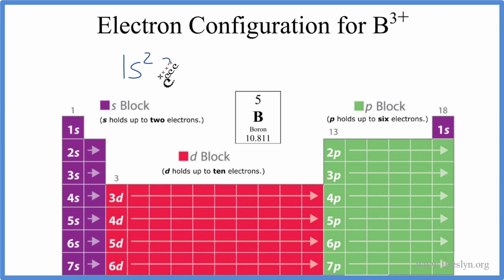we go to 2s, and it can hold up to two, and we need to have a total of five electrons. So, we can put two here, that gives us four.